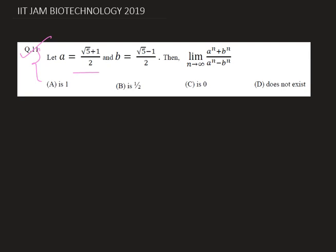We are given a equals root 5 plus 1 by 2 and b equals root 5 minus 1 by 2. And we need to find the limit as n tends to infinity of a to the power n plus b to the power n divided by a to the power n minus b to the power n.